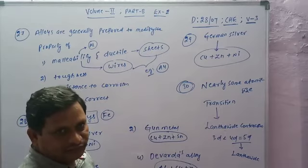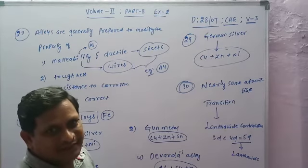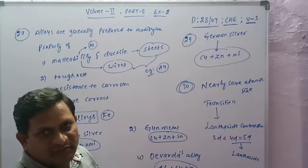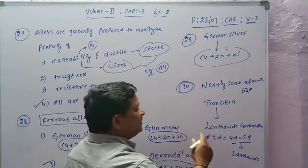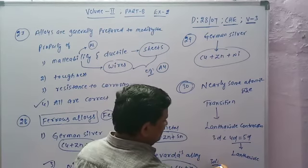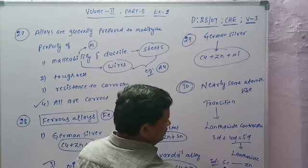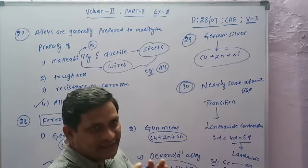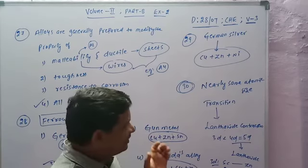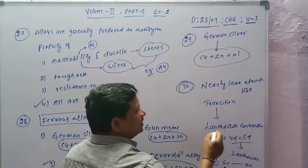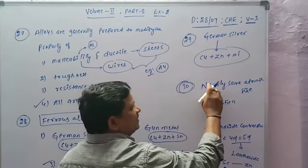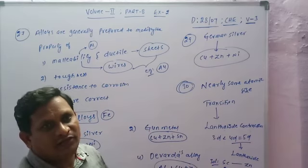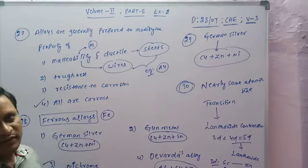Due to lanthanide contraction, the decrease in atomic radius from left to right is very negligible, so 4d and 5d series elements have nearly the same atomic radius. In the 3d series, from scandium (atomic number 21) to zinc, the size decreases across the period, but this decrease is very small. This phenomenon is lanthanide contraction, and due to it, transition elements have nearly the same atomic size, which gives them the ability to form alloys.